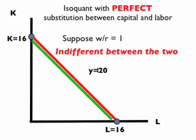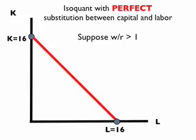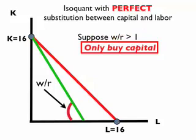But this is a razor's edge. If the wage-rental ratio is anything different than 1-to-1 in this case, then the firm will choose to use only capital or labor. For example, if the wage-rental ratio was slightly greater than 1, the firm would face relatively higher costs of labor and would only use capital — it could only reach the level of output associated with the red isoquant by choosing only 16 units of capital. Labor would not be chosen at all; the firm would completely specialize its production in the use of capital.